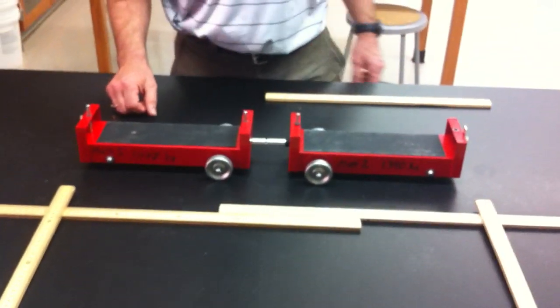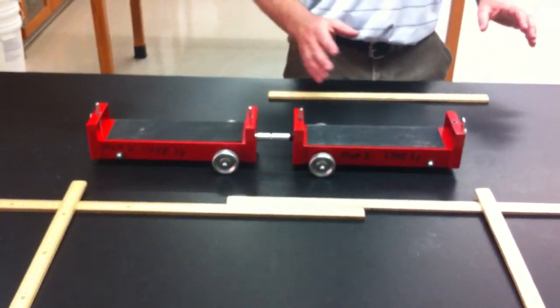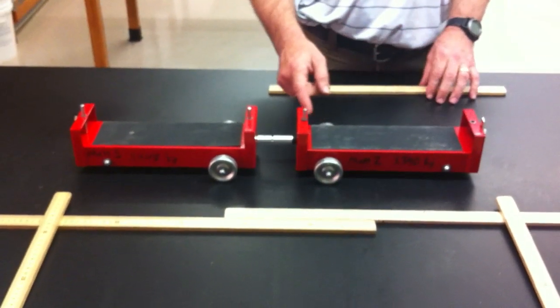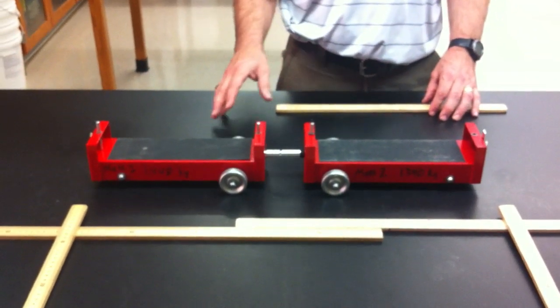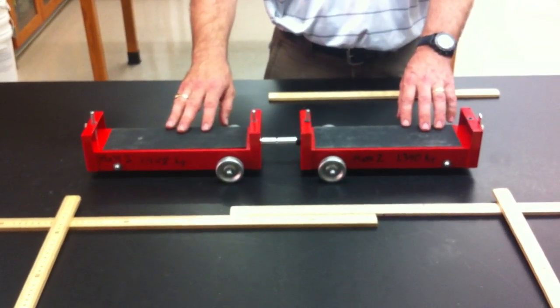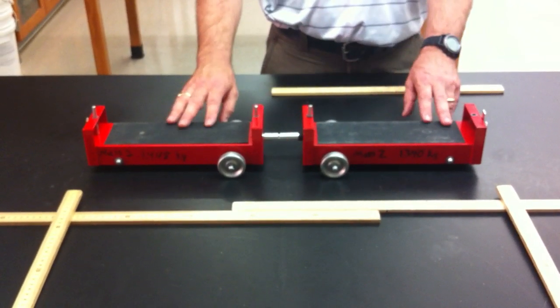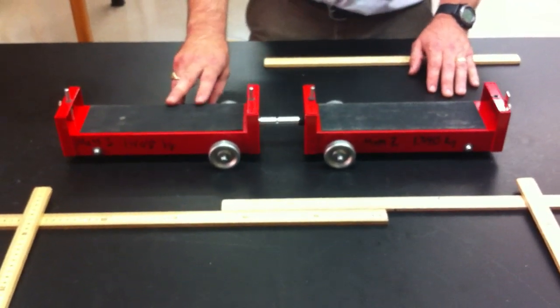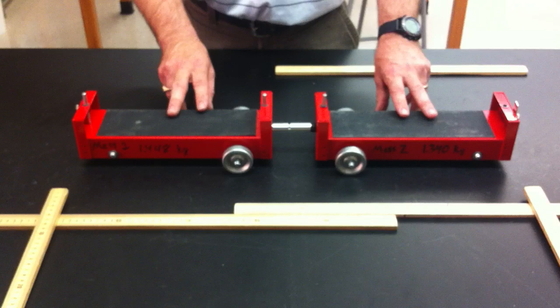Now we're going to kind of cheat. Usually we take and measure velocity and multiply the velocity times mass to get the momentum of each cart. But we're going to cheat a little bit and we're going to not measure the time. We're only going to measure the distance that these travel. So the distance is going to represent the velocity.